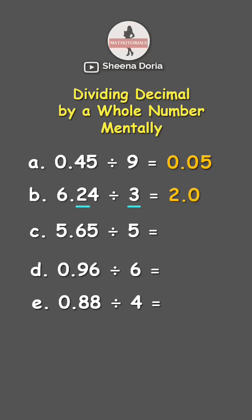That means we need to get the next digit, so that's 24 divided by 3, which is 8. Our answer is 2.08.